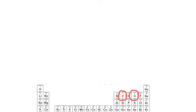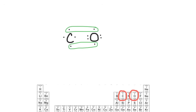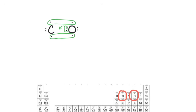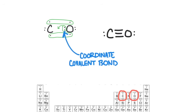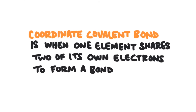Here's another example: carbon bonding with just one other oxygen. When we pair up all the unpaired electrons, oxygen fills its valence shell before carbon does, and carbon isn't satisfied — it only has six valence electrons. Oxygen realizes that carbon is short by two electrons, so it shares two of its own valence electrons that are in a lone pair to create a bond with the carbon. This is called a coordinate covalent bond — when one element shares two of its own electrons to create a bond with another element.